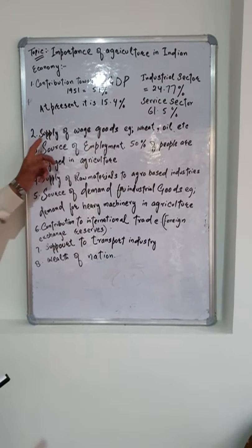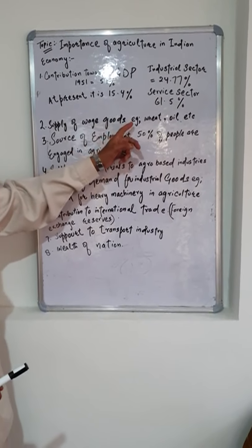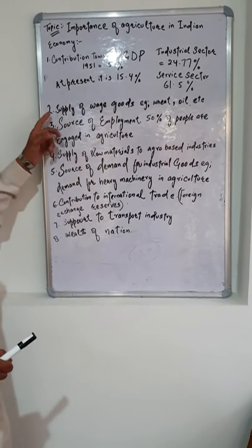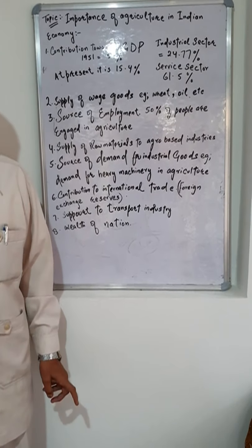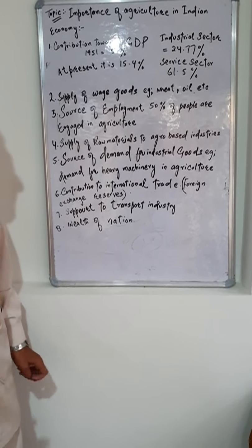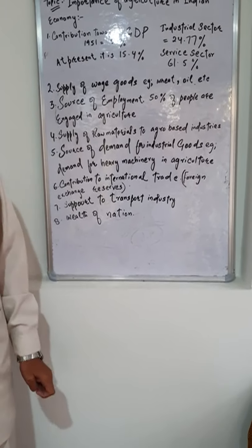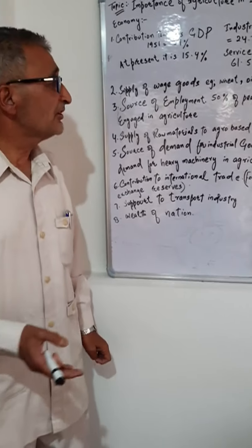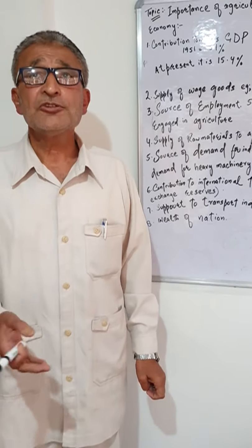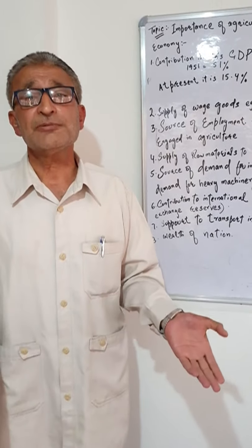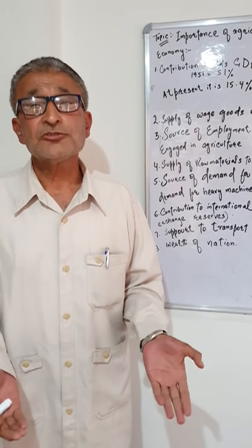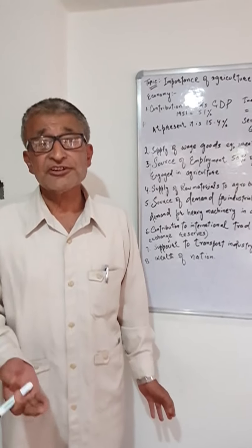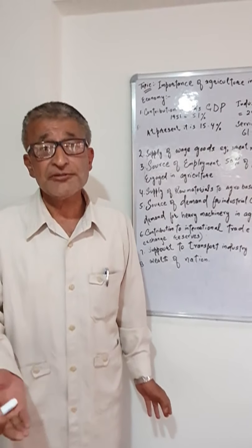The second point is the supply of wage goods — in other words, consumer goods. Agriculture supplies essential eatable items such as wheat, oil, and other food products. So the eatable items we get in our daily life come from agriculture. This shows that agriculture has got a vital and great importance in our lives.